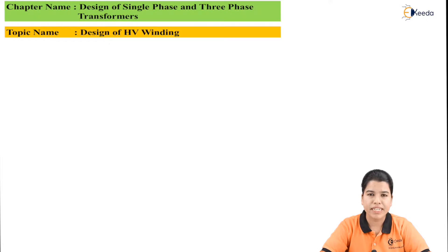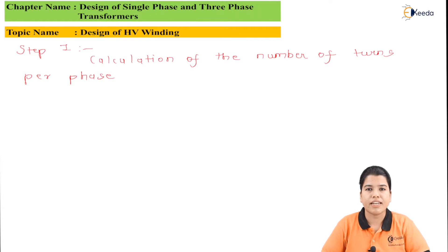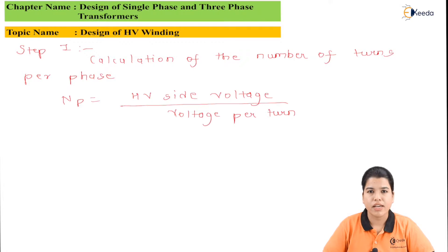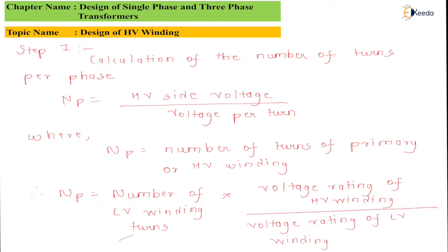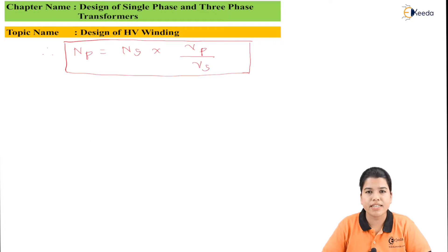The first step in designing the LV winding is calculation of the number of turns per phase. The formula used is: NP equals HV side voltage divided by voltage per turn, where NP is the number of turns of the primary or HV winding. This can be modified as NP equals NS multiplied by VP divided by VS.